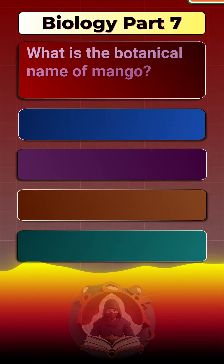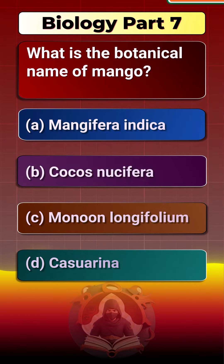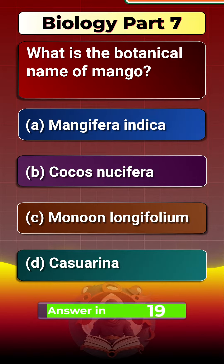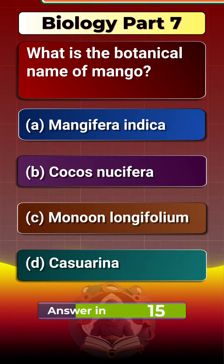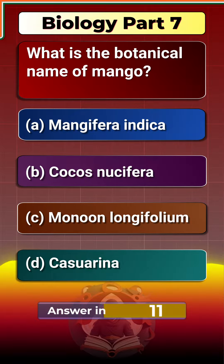What is the botanical name of mango? A. Mangifera indica. B. Cocos nucifera. C. Monon longifolium. D. Casuarina.